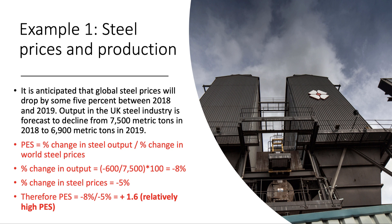As always, if you've been following these videos, put the formula into your answer straight away — you'll get credit for doing that. So: price elasticity of supply equals the percentage change in steel output divided by the percentage change in steel prices. The change in output has fallen by 600 metric tons, divided by the original level of 7,500, multiplied by 100 — that gives a percentage change of minus eight percent. We know that steel prices have fallen by five percent.